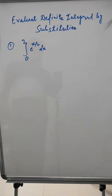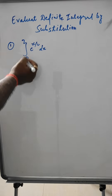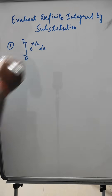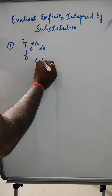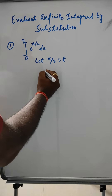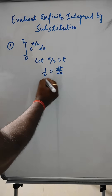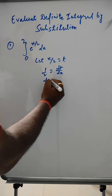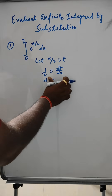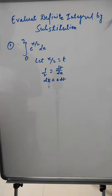The first problem is: integration with upper limit 2, lower limit 0, of e^(x/2) dx. We let x/2 = t, then differentiating gives 1/2 = dt/dx, so dx = 2 dt.